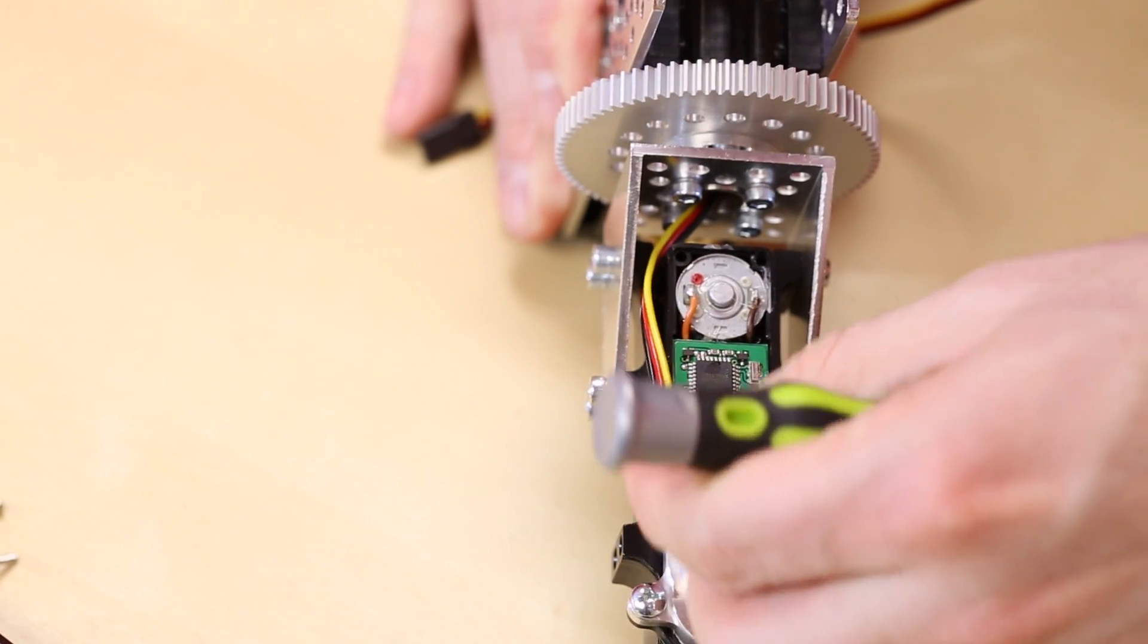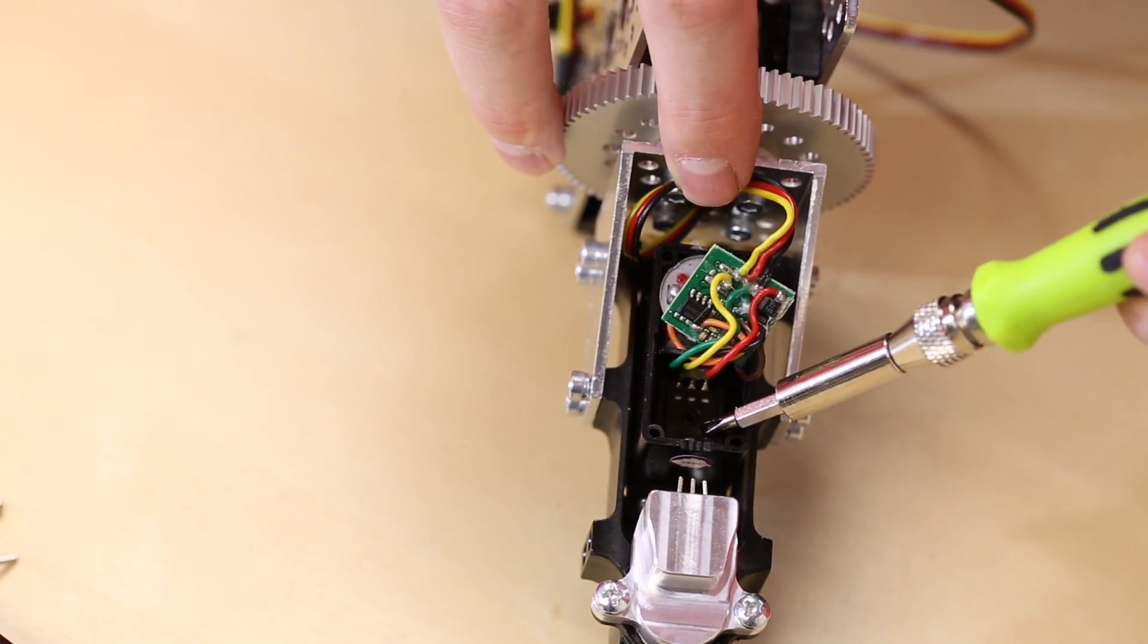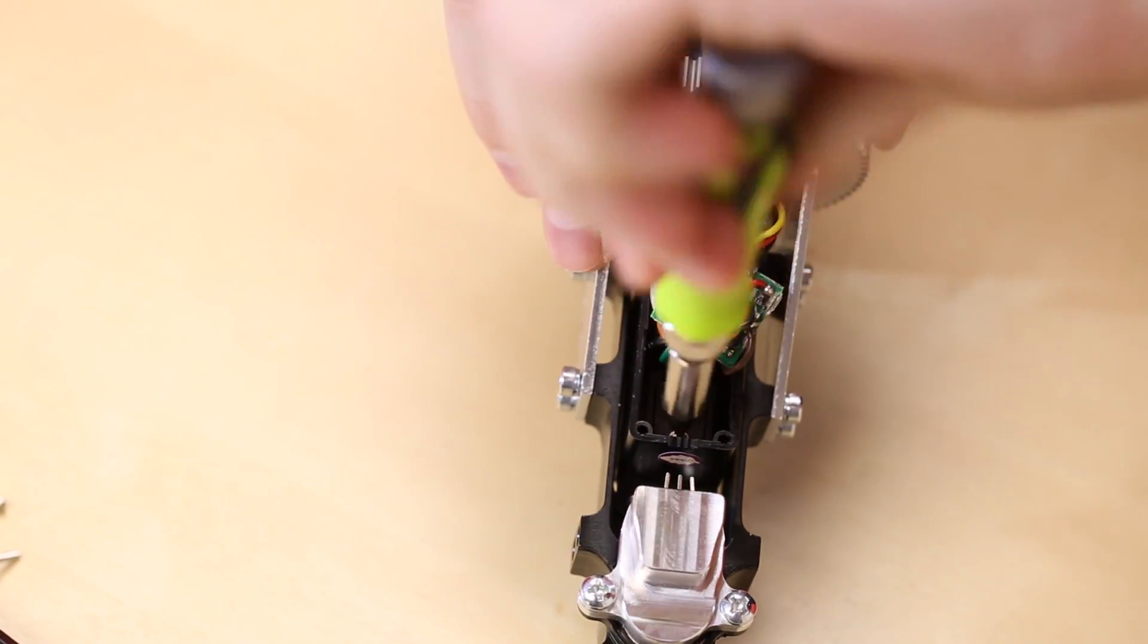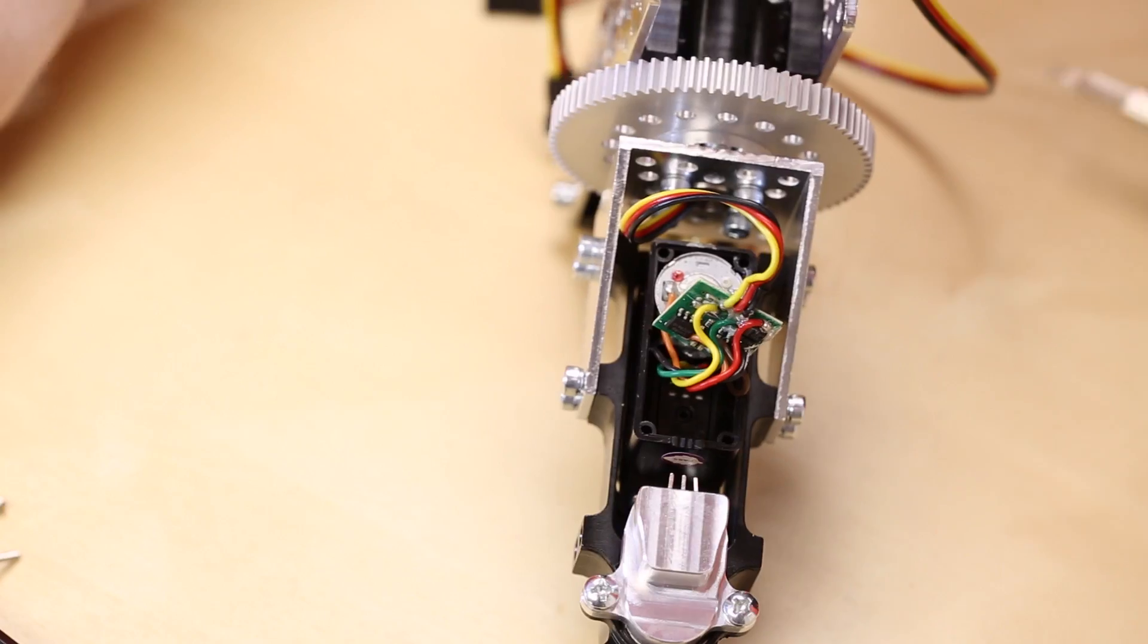If we lift this up, our potentiometer is actually located underneath. There's just one screw holding the potentiometer in place. We're going to remove that to gain access to the potentiometer.